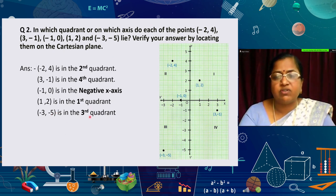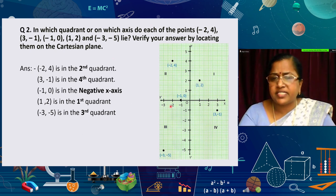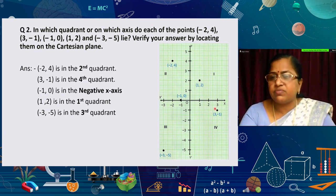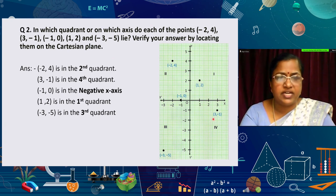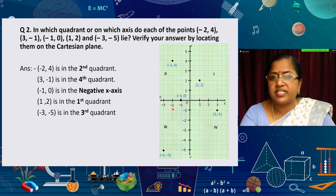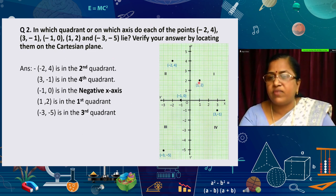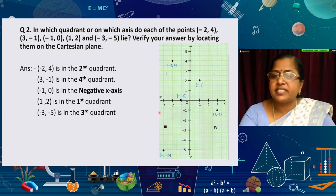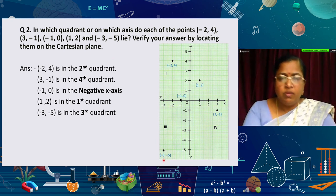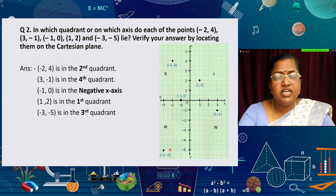Now verifying by locating on the Cartesian plane: (−2, 4) — x is −2, y is 4 — confirms second quadrant. (3, −1) — x is 3, y is −1 — confirms fourth quadrant. (−1, 0) lies on the x-axis, confirmed as negative x-axis. (1, 2) — both positive — confirms first quadrant. (−3, −5) — both negative — lies in the third quadrant.